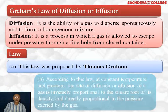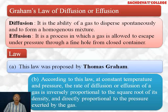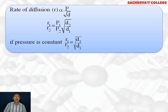This law was proposed by Thomas Graham. According to this law, at constant temperature and pressure, the rate of diffusion or effusion of a gas is inversely proportional to the square root of its density or molecular weight, and directly proportional to the pressure exerted by the gas. Mathematically, rate is directly proportional to pressure and inversely proportional to square root of density.